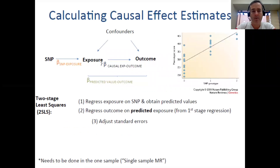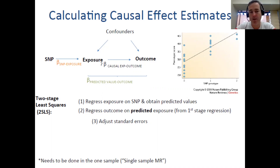Let's talk about two-stage least squares regression. Two-stage least squares is appropriate for when one has a single sample of individuals where all the individuals have been measured on the SNP, the exposure, and the outcome. This is sometimes called single sample Mendelian randomization.